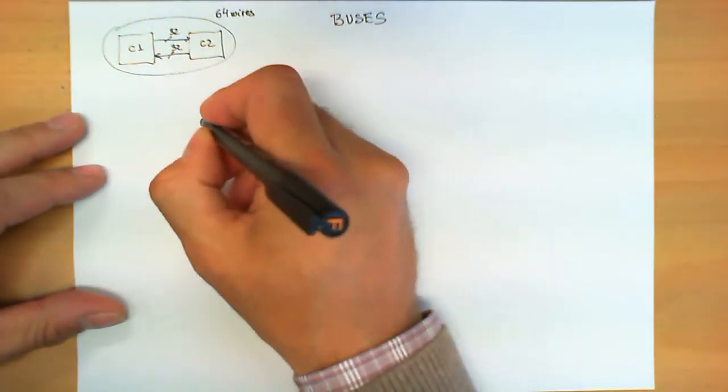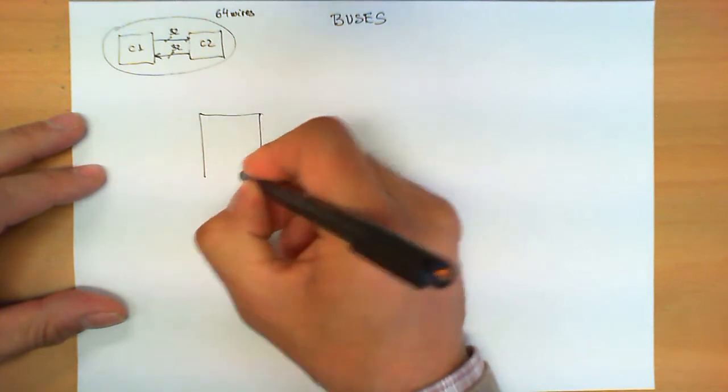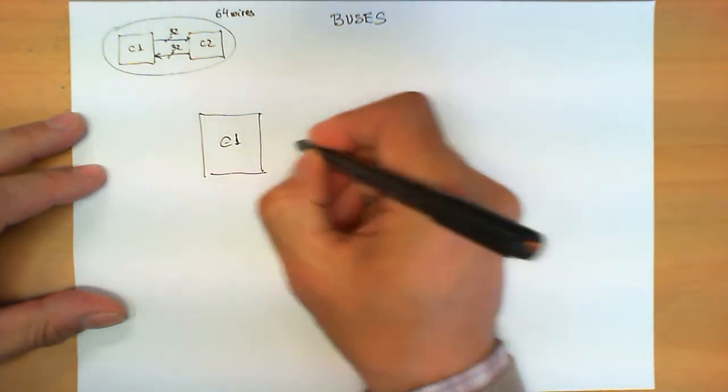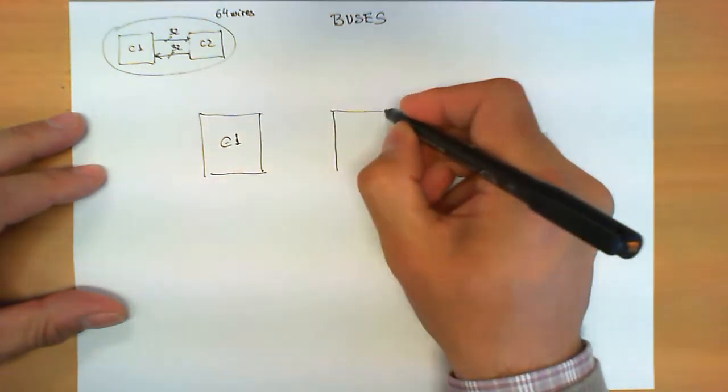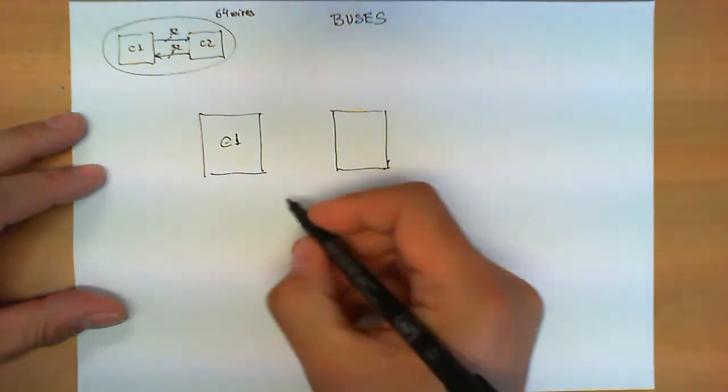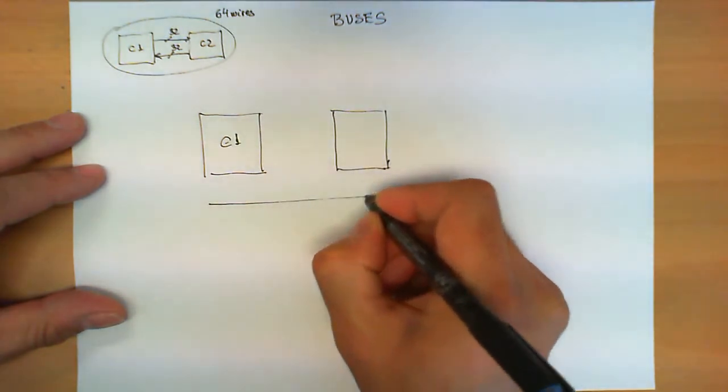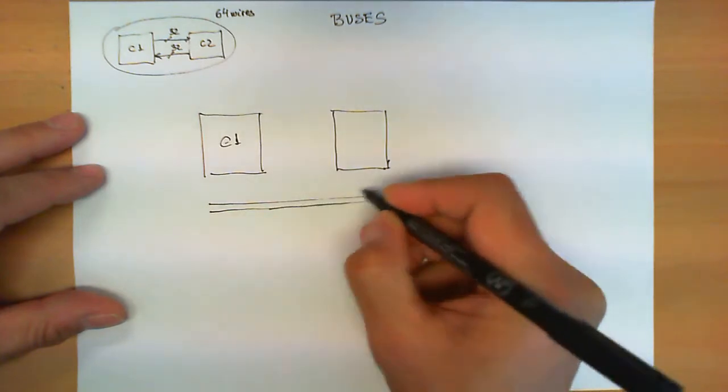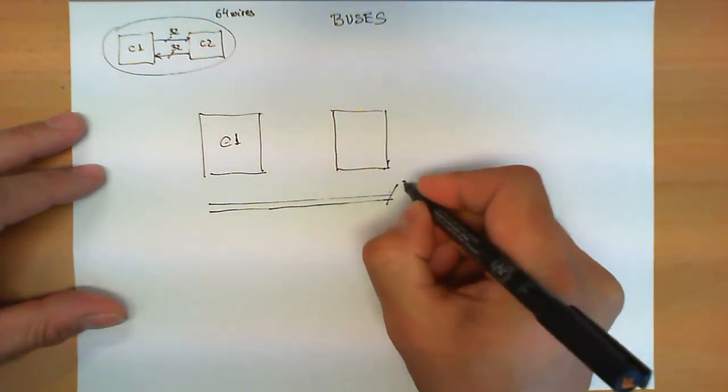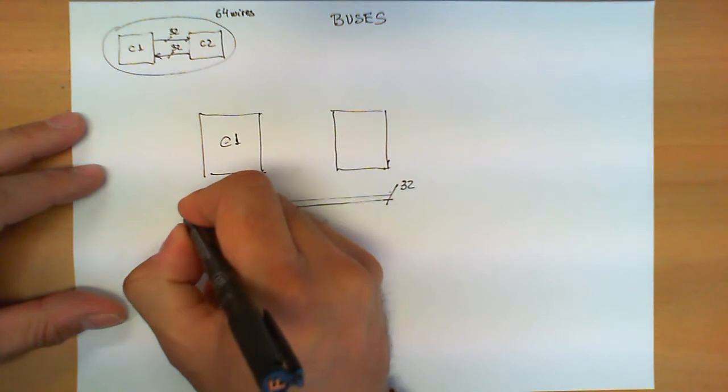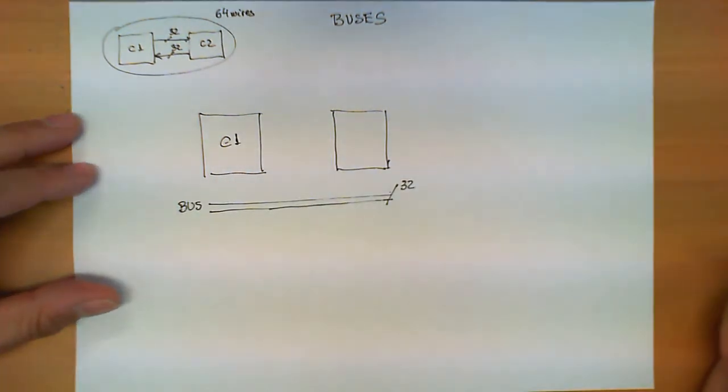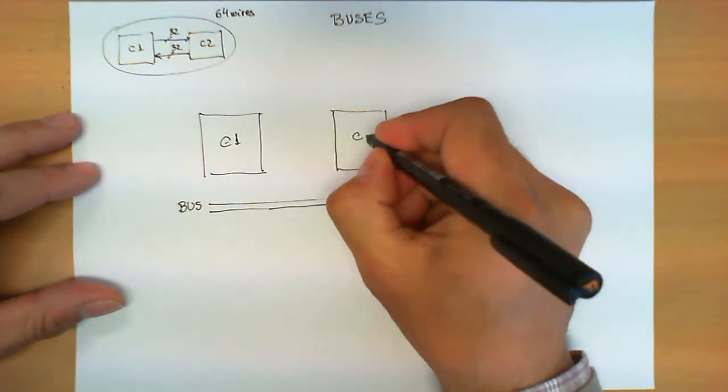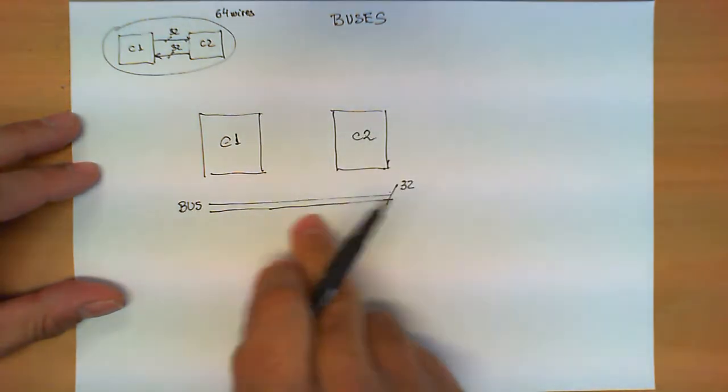The way to avoid this duplication is the following. This is circuit 1 and this is circuit 2. Now what we're going to do is draw down here a thicker line which maintains 32 wires, and this is what we're going to call the bus.